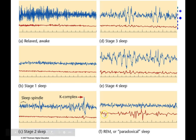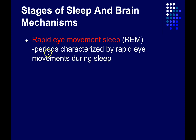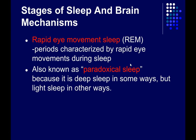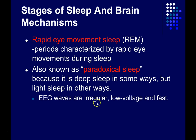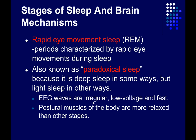What really sets REM apart are the eye movements. These eye movements can be very large and frequent during REM sleep, which is short for rapid eye movement. REM sleep is also known as paradoxical sleep — usually how it's referred to in animals — because it's deep sleep in some ways but light sleep in others. The EEG waves are irregular, low voltage, and fast, like a light sleep. But the postural muscles of the body are much more relaxed than at other stages, more like a deep sleep.